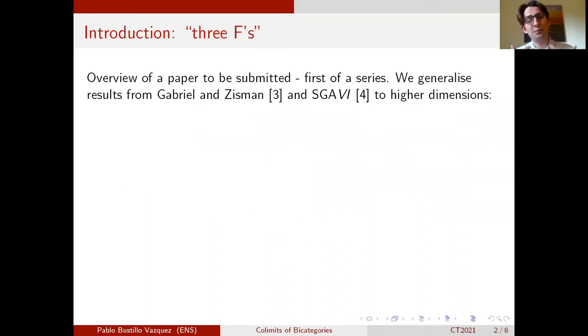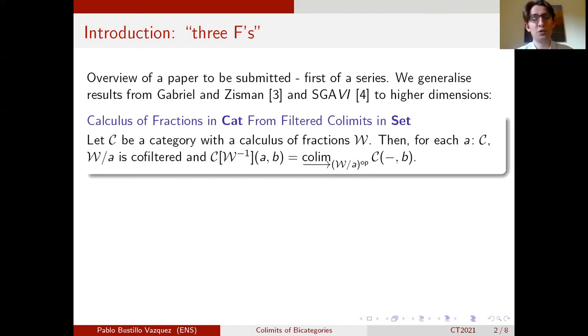So this presentation is an overview of a paper that should be online by the time you're watching this video. In this paper we generalize two results from ordinary category theory. The first of which is a result from Gabriel and Zisman that says that if you have a category with a calculus of fraction W, then you can compute the homsets of the localization as filtered colimits of sets.